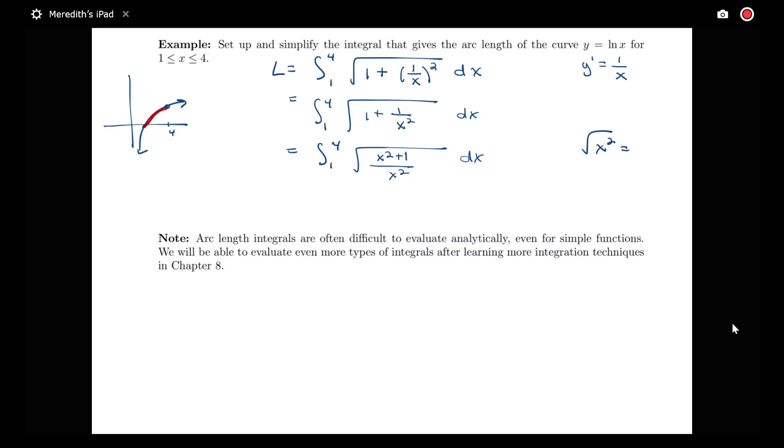I know the square root of x squared is equal to the absolute value of x, which is x if x is greater than or equal to 0, and negative x if x is less than 0. Here my bounds are between 1 and 4, so x is always positive. So I can say this is equal to the integral from 1 to 4 of the square root of x squared plus 1 all over x dx.